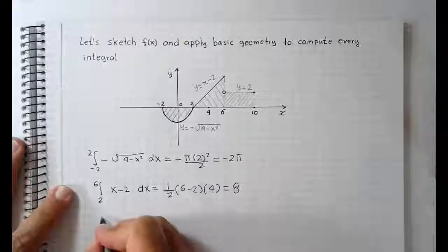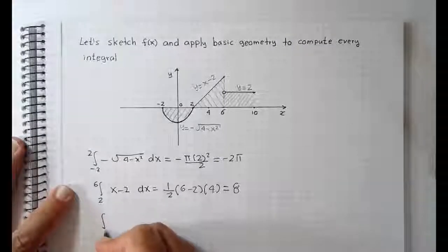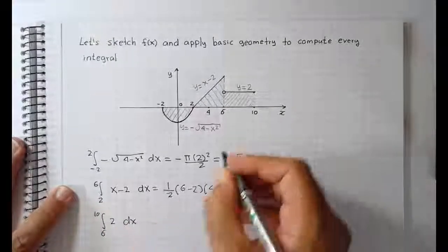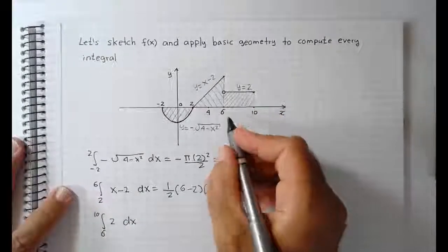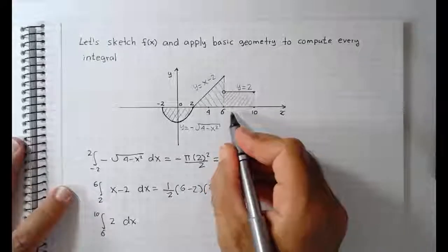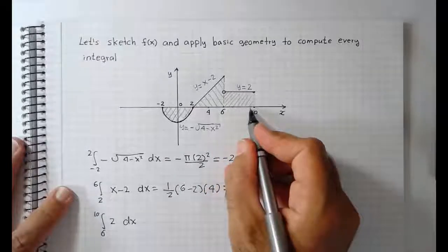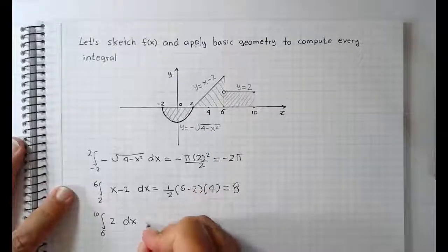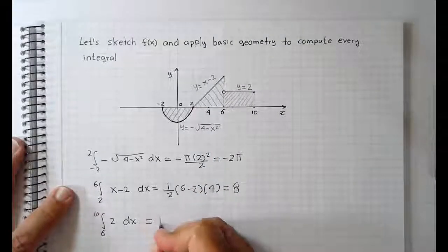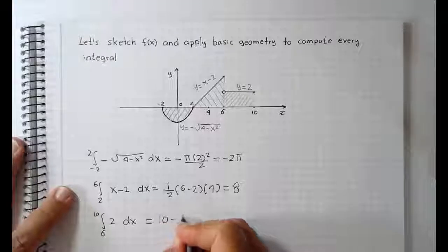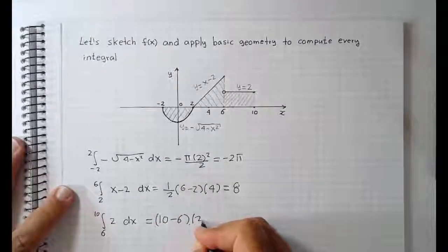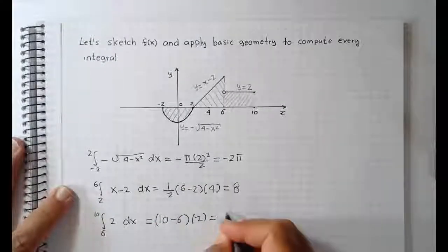The integral from 6 to 10 of 2 dx is just a rectangle where the base is 10 minus 6, which is 4, and the height is 2. So that's equal to 10 minus 6 times 2, which is equal to 8.